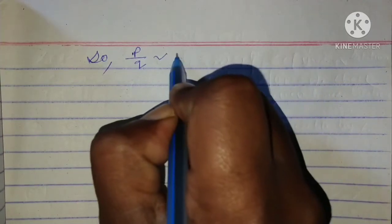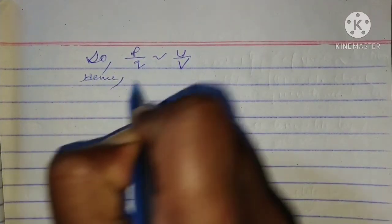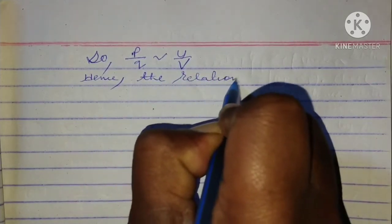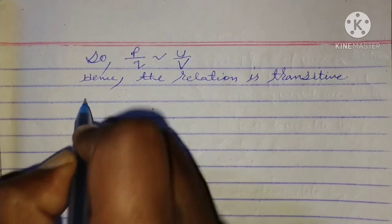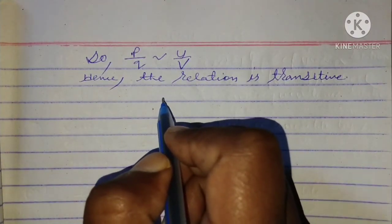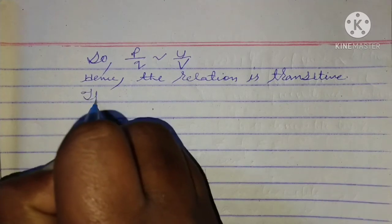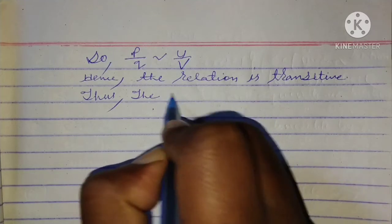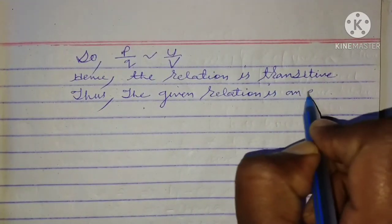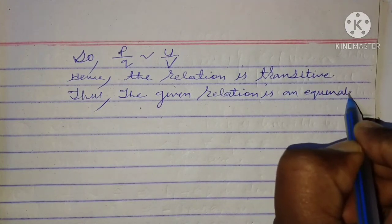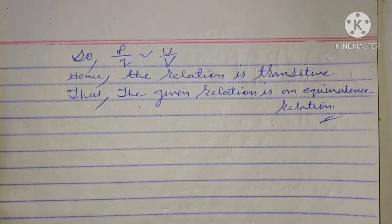This means p/q is equivalent to u/v. Hence the relation is transitive. Therefore we can say this relation is an equivalence relation because it is reflexive, symmetric, and transitive. Hence it is an equivalence relation. No further questions — thanks for watching.